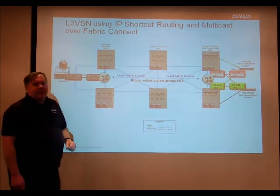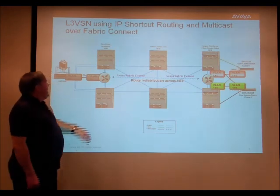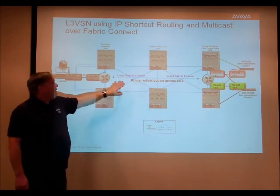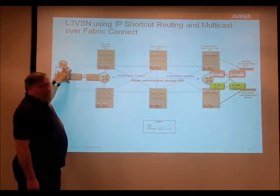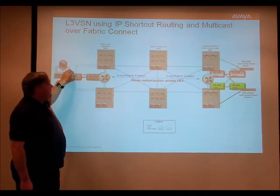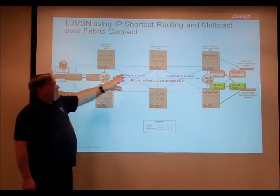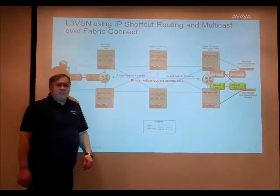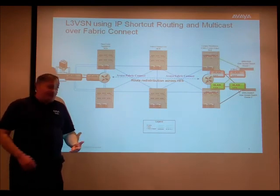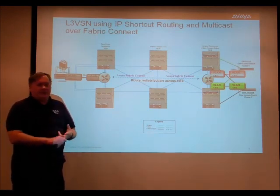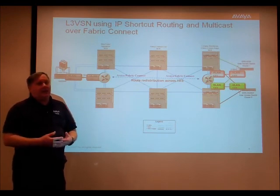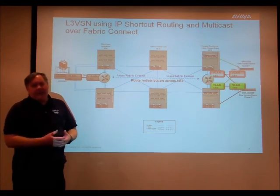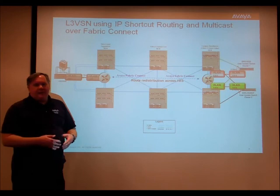And we'll demonstrate that with the pings we have running through the network. At the same time, with our extensions to SPB, our Fabric Connect allows us to have the multicast server sitting on the top of rack switches, serving up a multicast video stream to both of these different VLANs at the other end of the network. The efficiency of multicast is well known, but the problems of having to run PIM or DVMRP or multicast routing protocols adds a lot of overhead and can create very slow recovery in a failure scenario.